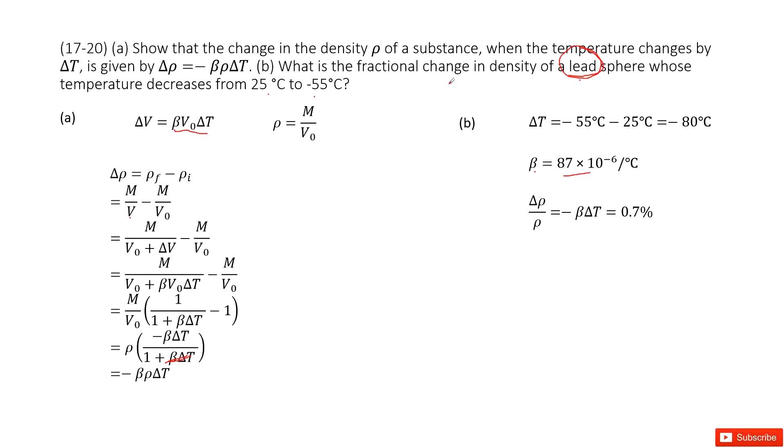Now next step, we want to find the fractional change. So delta rho divided by rho. Delta rho divided by rho is negative beta delta T. Beta is given, delta T is given. Input known quantity and get the answer 0.7%.